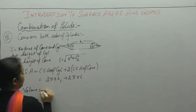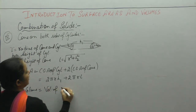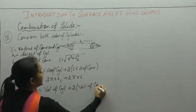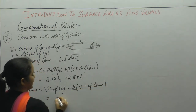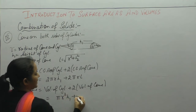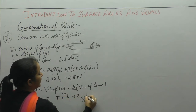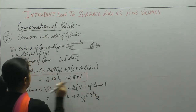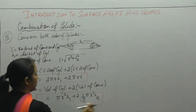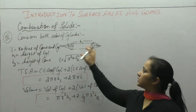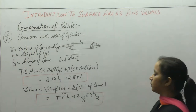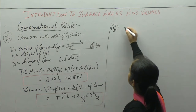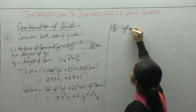Volume = volume of cylinder + 2 × volume of cone. Volume of cone is (1/3)πr²h. So this is the total surface area and volume in the case when both ends of the cylinder are conical. Next we will discuss cylinder with hemispherical ends.